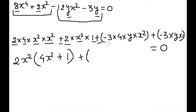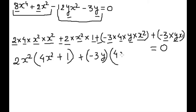Now we write common terms for the second group: minus 3 and y are common. So we factor out minus 3y, and the remaining terms give 4x squared plus 1 in the bracket, equal to 0.